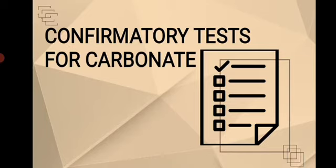For the first confirmatory test for carbonate, let's have a short introduction. In chemistry, carbonate is an inorganic salt characterized by the presence of the carbonate ion, in which the carbon atom is surrounded by three oxygen atoms in a triangular planar manner. Carbonate materials are found in sedimentary rocks; the most common is calcite, which is the main component of limestone.